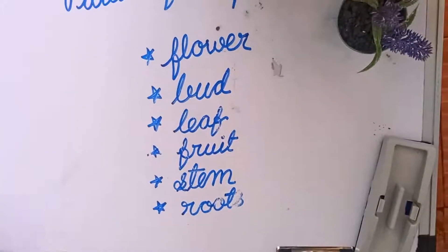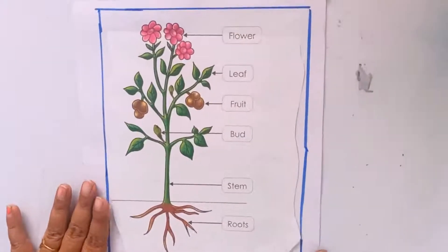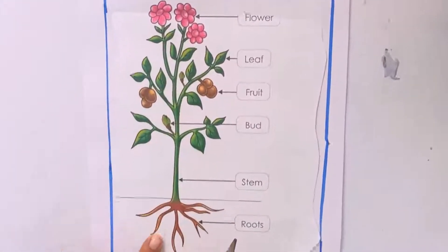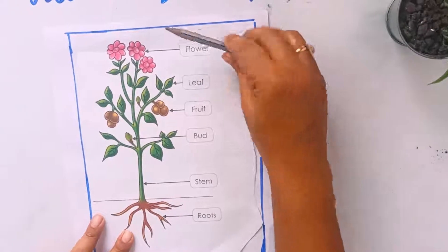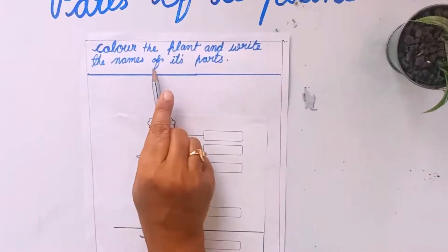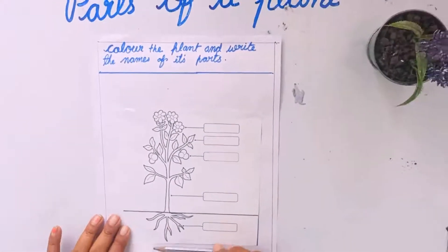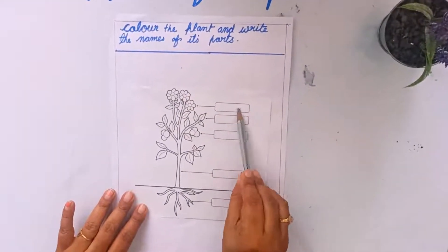Now one more exercise we will do. This is one picture — you have to color the picture and label the parts of a plant. You already know them. Color the plant and write the names of its parts. This is for your revision — color it properly and write the parts of a plant.